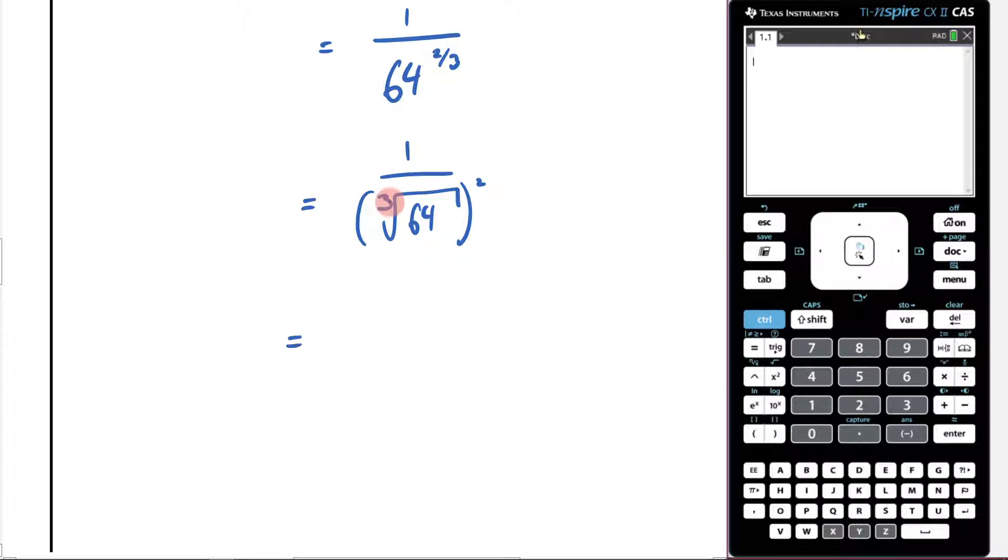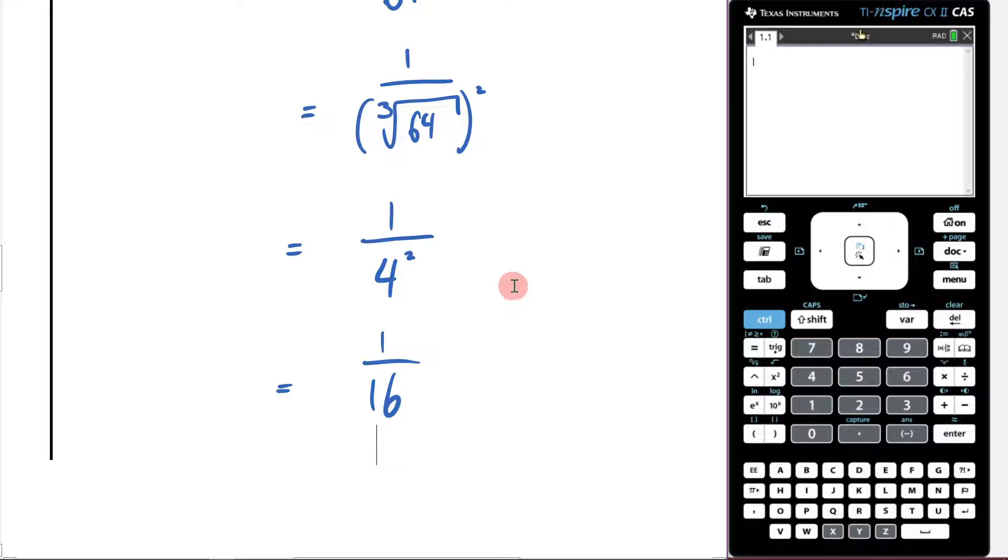What is the cube root of 64? It is 4, because 4 times 4 times 4 is 64. Then we're going to square it. What is 4 squared? It is 1 on 16. And that's going to be our answer. Perfect.